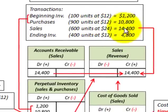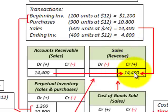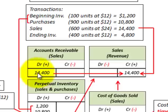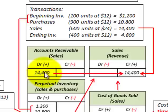First, for our sales of $14,400, we'd credit sales revenue on our income statement for $14,400. The debit amount would go to accounts receivable for $14,400 on our balance sheet, since we assume we sold all our product on account as a receivable.